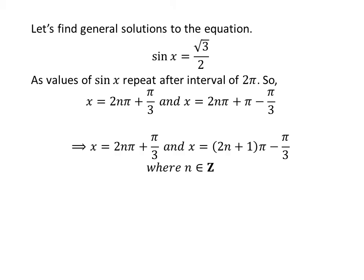Further simplification gives us the general solutions: x equals 2nπ plus π upon 3 and x equals (2n + 1)π minus π upon 3.